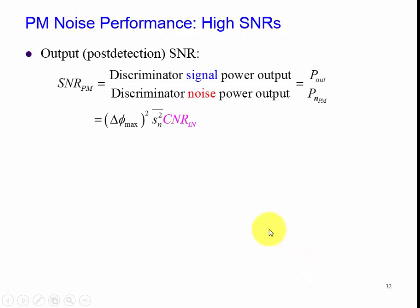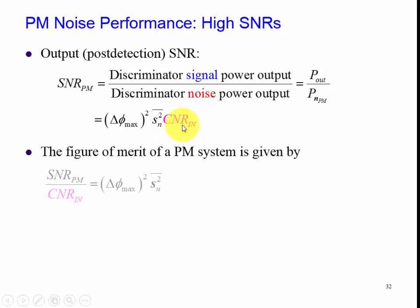When we do our signal to noise ratio of the phase modulated signal, basically we're taking at the discriminator output the signal power output over the noise power output. We have this expression based on the previous two slides. Hence, our figure of merit is the ratio of this divided by the ratio of carrier to noise, which leaves us with this.